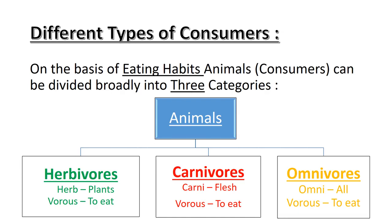The second one is Carnivores. 'Carni' means flesh, 'vores' means to eat. So the animals which eat flesh are called carnivores. The third category is Omnivores. 'Omni' means all, 'vores' means to eat. So the animals which eat both plants as well as flesh are called omnivores.